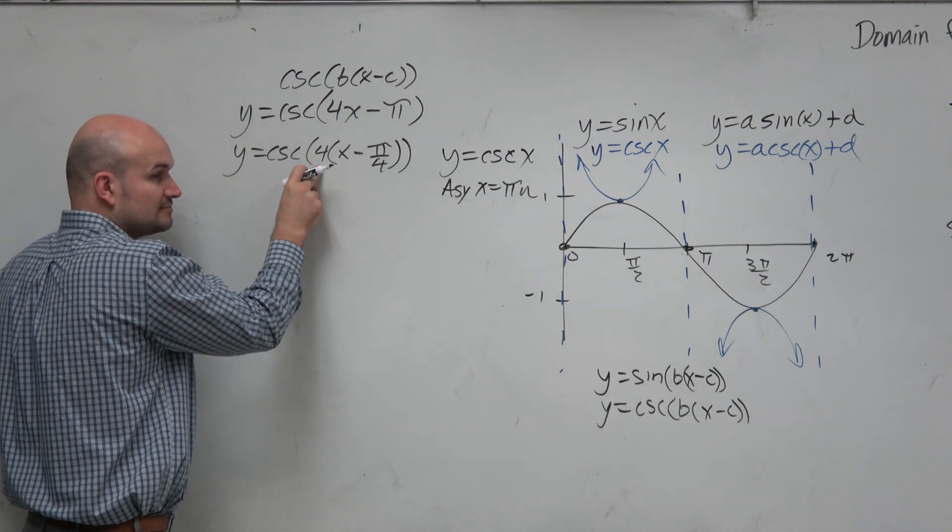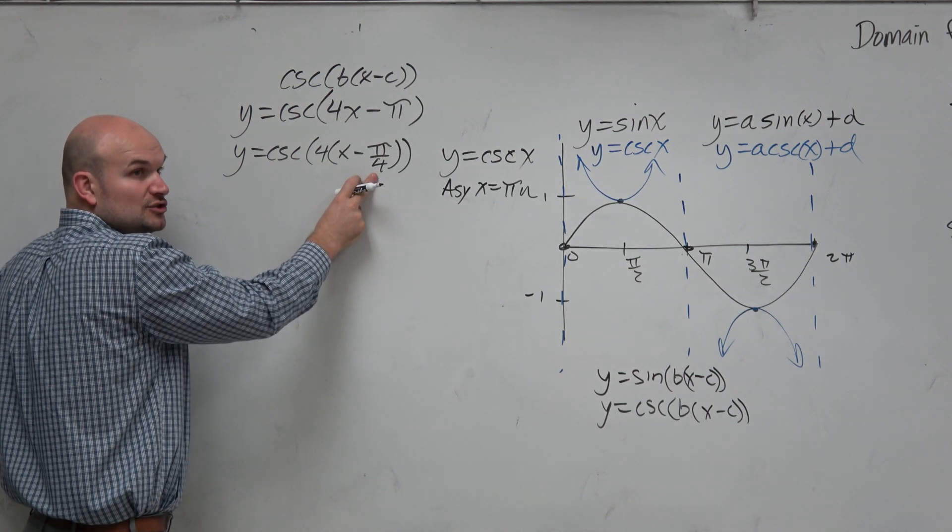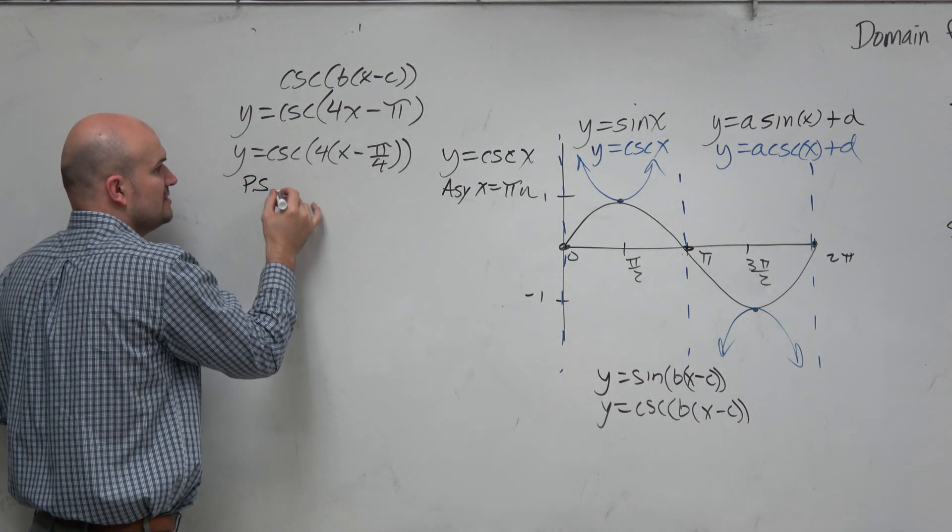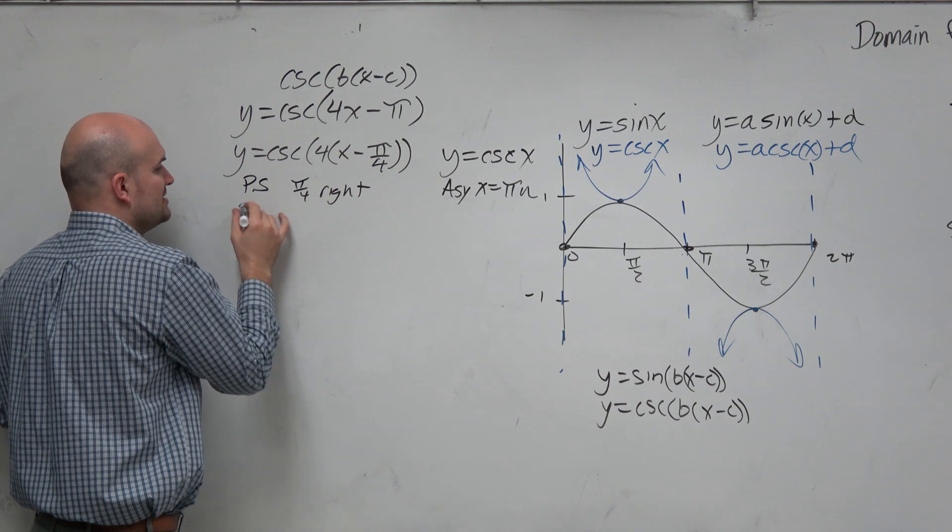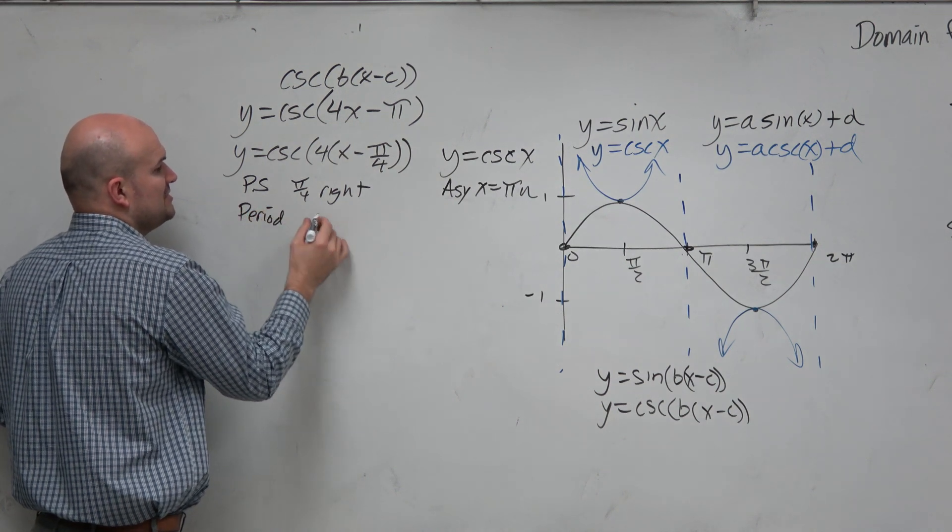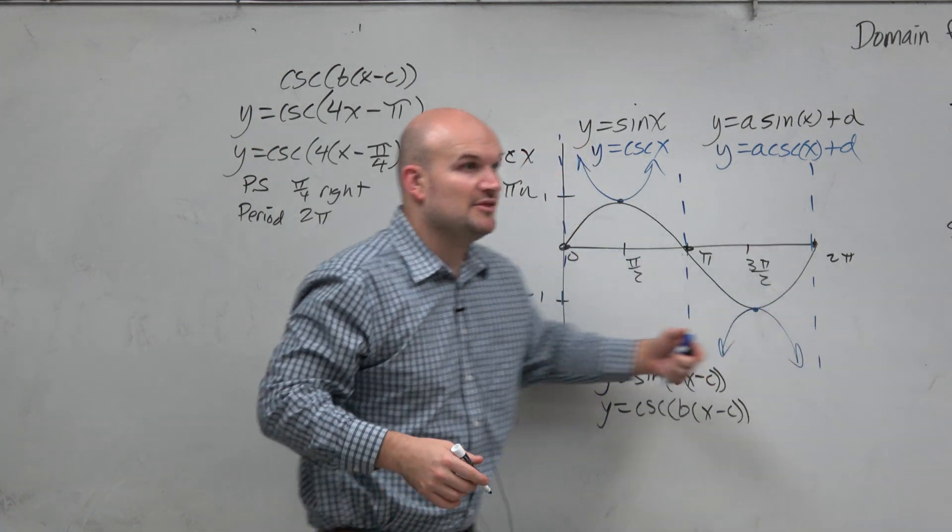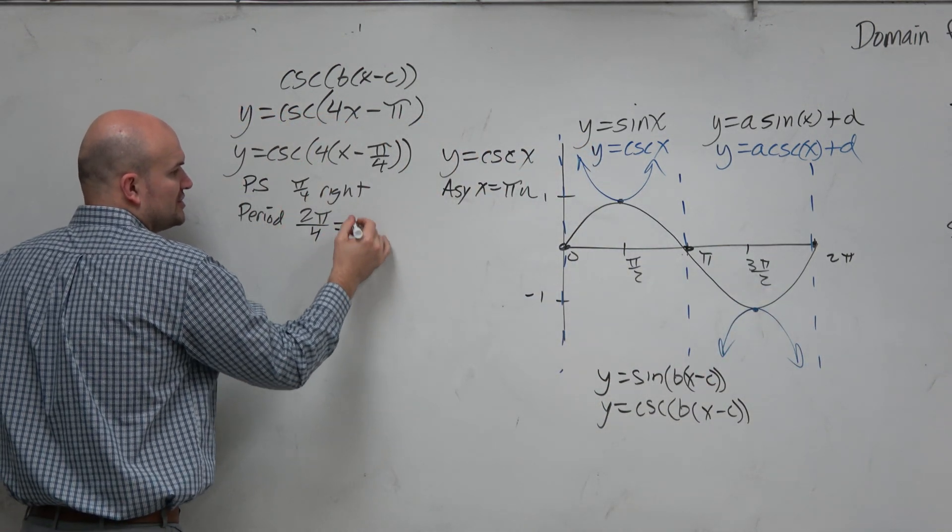So we can see there is a horizontal compression of 4 and a horizontal shift of pi over 4 to the right. Right? So we could say the phase shift is pi over 4 right. And we could say the period has been changed, because the period was originally 2 pi. But now the period is 2 pi divided by b, right? Which is pi halves.